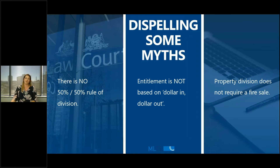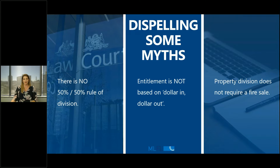Let's dispel some myths about property settlement. There is no rule that you get 50/50 if you get married — it's a lot more complicated than that. It is not a case of whatever you put in is what you get out, and there's no requirement that everything gets sold. We're talking about adjusting the ownership of assets. Sometimes that does mean people need to sell, but if someone can afford to keep an asset, the court wouldn't order it to be sold.